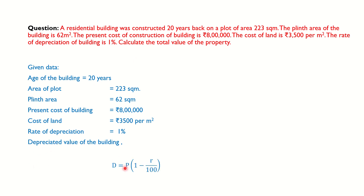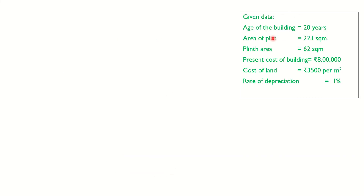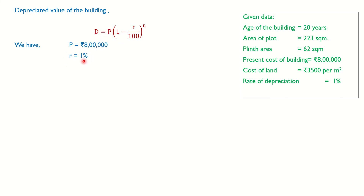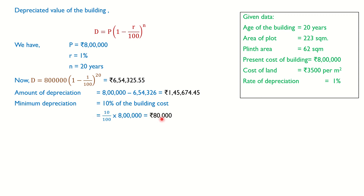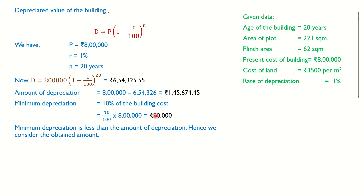Using the formula, with P = 8 lakhs, r = 1 percent, and n = 20 years, we calculate the depreciated value as 6 lakh 54,325 rupees, approximately 6 lakh 54,326. The amount of depreciation is therefore 1 lakh 45,674 rupees. The minimum depreciation is 10 percent of the building cost, which is 80,000 rupees. Since our calculated depreciation exceeds the minimum, we use the obtained value. The depreciated cost of the building is 6 lakh 54,325.55 rupees.